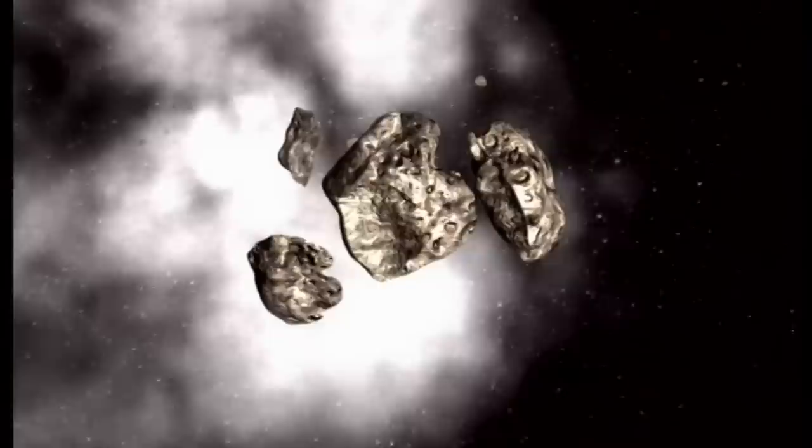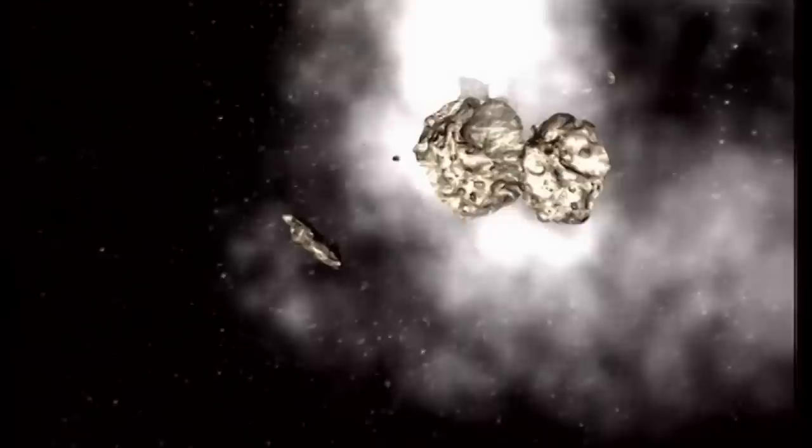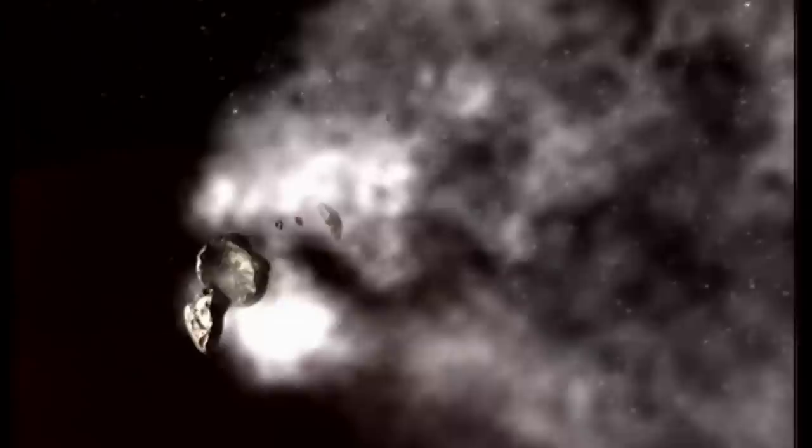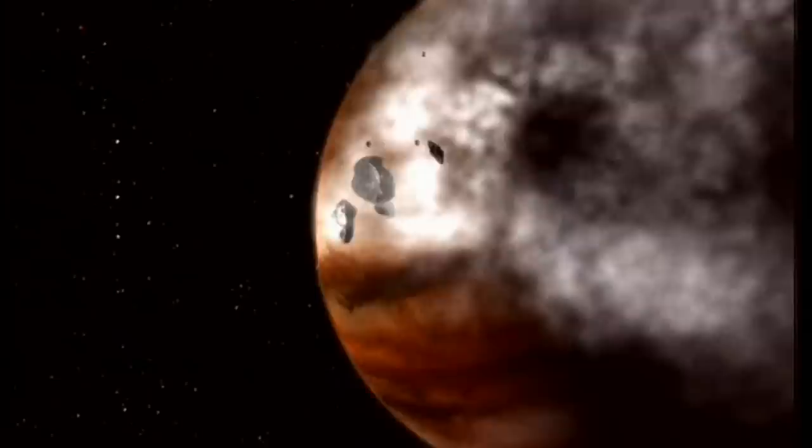Jupiter l'a brisée en plus de vingt fragments, mais ce n'est qu'un début. La comète, nommée Schumacher-Levy 9, va devenir le plus grand spectacle céleste du siècle. En plongeant vers Jupiter, elle bombarde de toutes parts l'épaisse atmosphère de la planète gazeuse. C'était en juillet 1994.